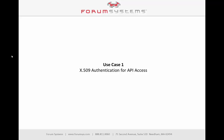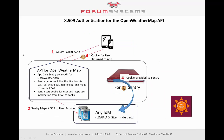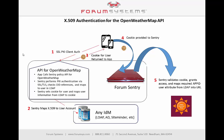The first use case will demonstrate how an X509 client certificate can be used for authentication to access a cloud-hosted API. FormSentry will be acting as a secure reverse proxy, or a gateway, for the API. Using SOAP Sonar as our API client tool, we'll make a series of API calls through Sentry to the OpenWeatherMap API. This RESTful weather service provides current weather data in JSON format and requires an app ID to gain access. The first step is the client app making a call for the API into FormSentry. Sentry will do the X509 authentication of the provided client cert, and then map the X509 to a user account in Active Directory.